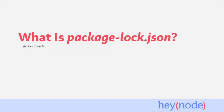You may have noticed it before. You install a package using npm and suddenly a new file appears in your folder called package-lock.json. This file is generated by npm since npm version 5, released in 2017. It does what the name suggests — it helps to lock our package dependencies down and all of their sub-dependencies.